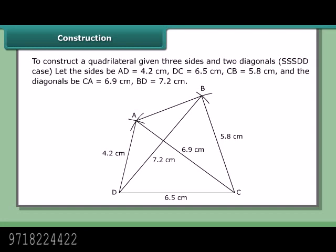Construction: To construct a quadrilateral given three sides and two diagonals — the SSSDD case. Let the sides be AD = 4.2 cm, DC = 6.5 cm, CB = 5.8 cm, and the diagonals AC = 6.9 cm, BD = 7.2 cm. The two triangles we can construct to complete the quadrilateral are BCD and ACD.